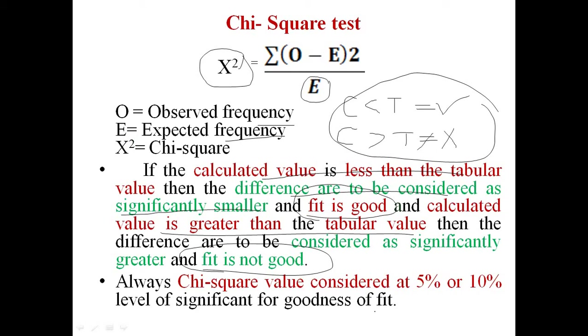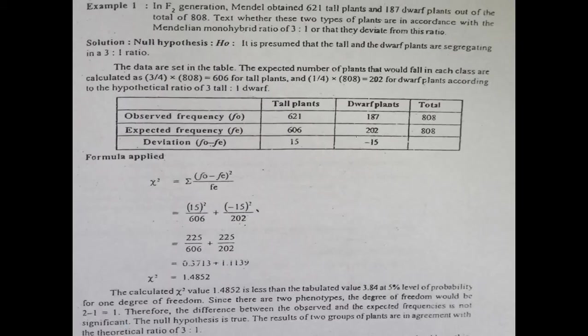As I mentioned in the t-test also, if no significance level is given, we use 5%. Generally, 5% and 10% levels of significance are used. Let's go to the example for the 3:1 ratio.